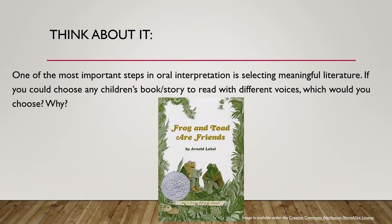Frog and Toad continued to argue about what month it is. Finally, Frog grabs Toad's calendar. Here's how this chapter ends. Then Frog ran back to Toad's bed. 'Toad! Toad! Wake up! It is May now!' 'What?' said Toad. 'Can it be May so soon?' 'Yes!' said Frog. 'Look at your calendar!' Toad looked at the calendar. The May page was on top. 'Why, it is May!' said Toad as he climbed out of bed. Then he and Frog ran outside to see how the world was looking in the spring.